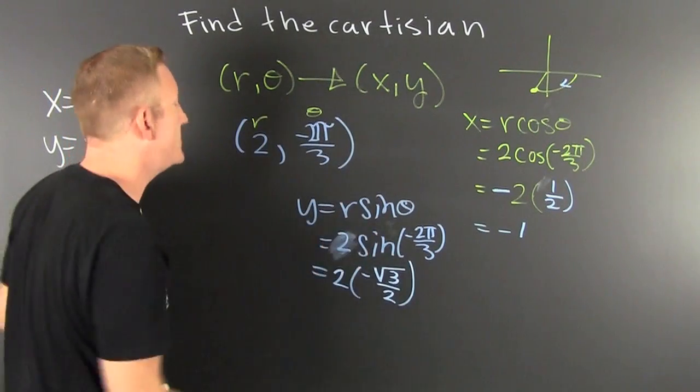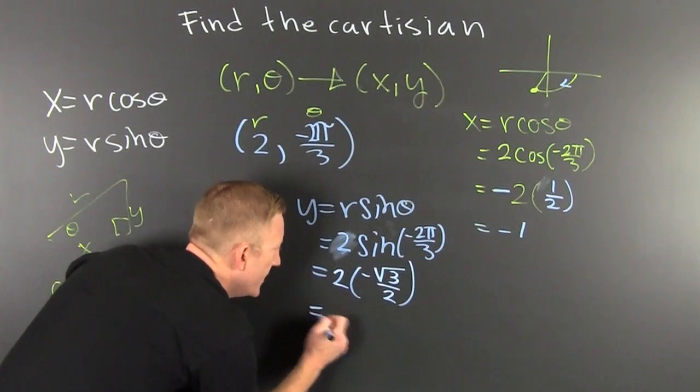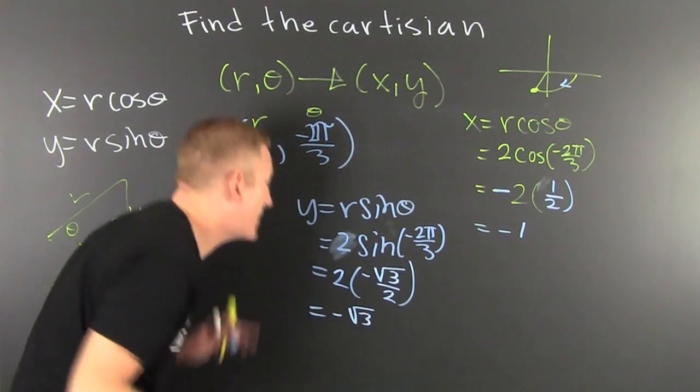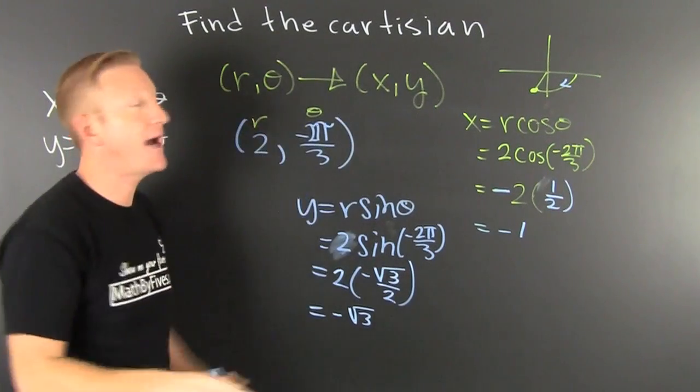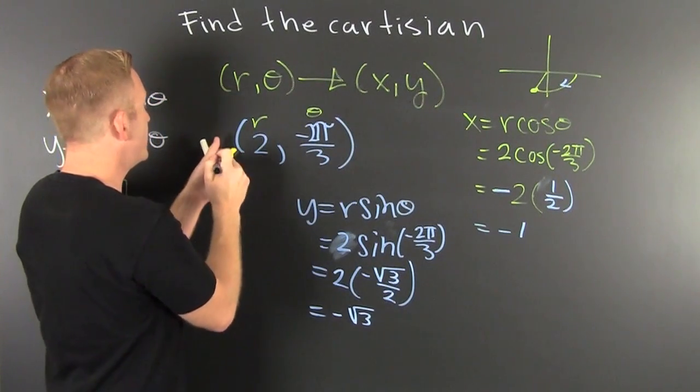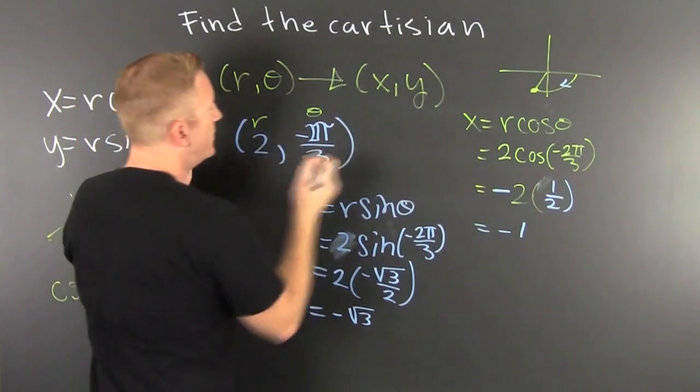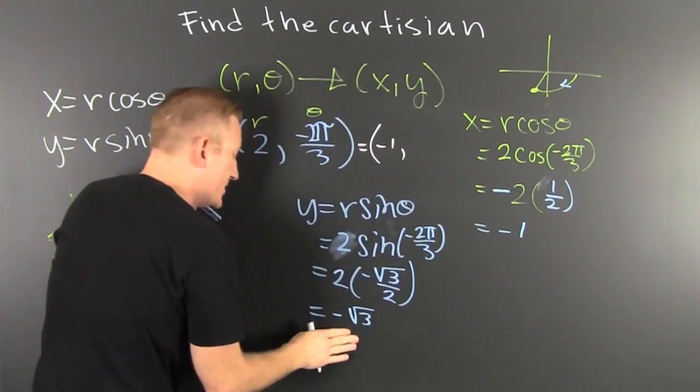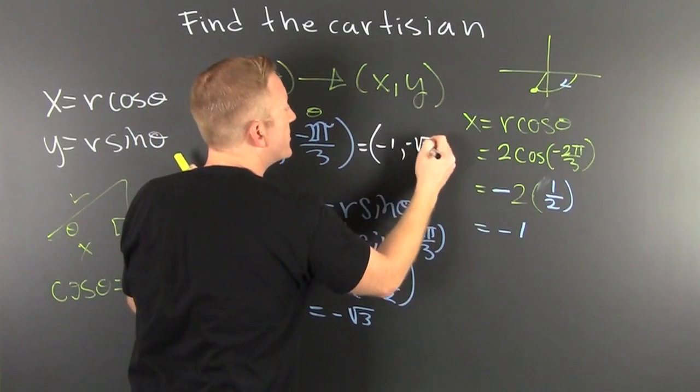So then we see that's minus root 3. Now we just have to put it together in one tight package. r, theta, this guy, is going to translate to this one over here. So then my x is minus 1 and my y is minus root 3.